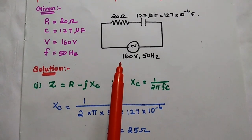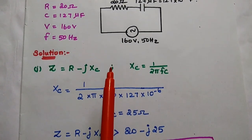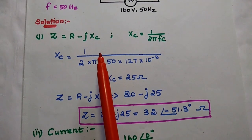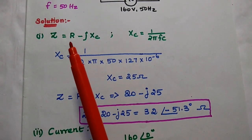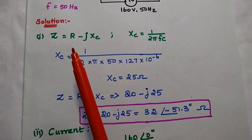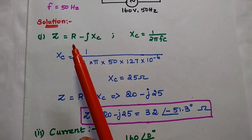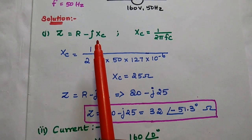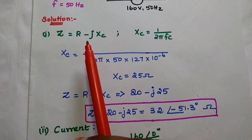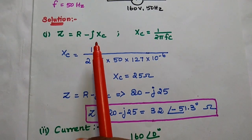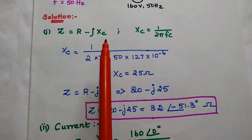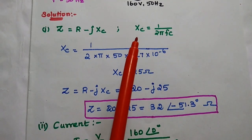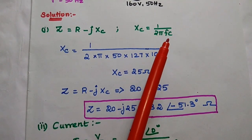We are going to find the impedance, current, power factor, and power for the given values. In the solution part, first we are going to find out the impedance value. Impedance is the combination of resistance and reactance. Resistance is the real part, capacitive reactance is the imaginary part, and since a capacitor has negative reactance, Z is equal to R minus j·XC. We find XC using the formula XC = 1 divided by 2·π·F·C.